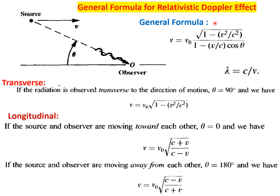There is also a general formula to cover all cases. If the source of light is at an angle θ to the observer, and the relative speed between them is v, then the general formula is: ν = ν₀ · √(1 − v²/c²) / (1 − (v/c)·cosθ).